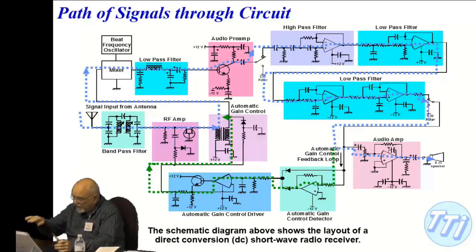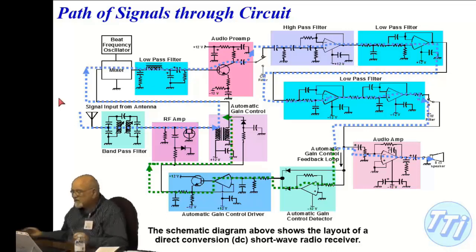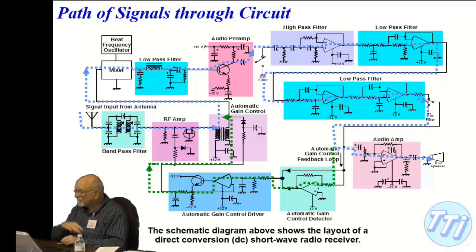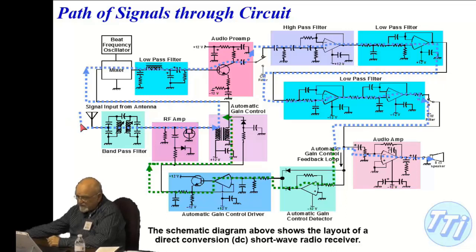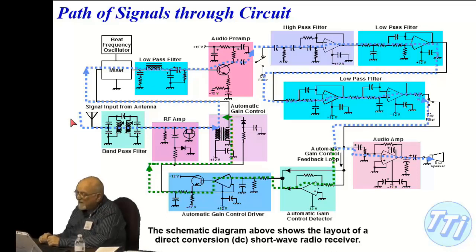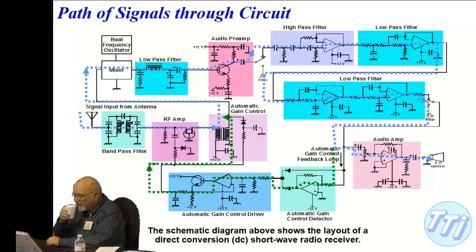I'm just going to kind of quickly go through this. Usually what happens in a schematic is you try to design them — you have more than one page, just like you have on your blueprints. It's going from left to right. Left is input, right is output. So what you'll see here is this symbol right here, this point here, which is one of the symbols representing an antenna. And what this is, is a radio — a schematic of a simple radio.